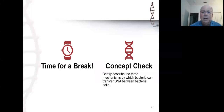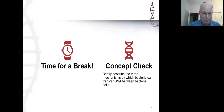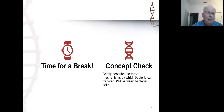Welcome back from the break. Let's look at this question: briefly describe three mechanisms by which bacteria can transfer DNA between bacterial cells. We discussed this in the previous section. We've got transformation, transduction, and conjugation. In transformation, it's the taking up of DNA from the environment — this could be plasmids free in the environment, or fragments of genomic DNA that are in the environment.